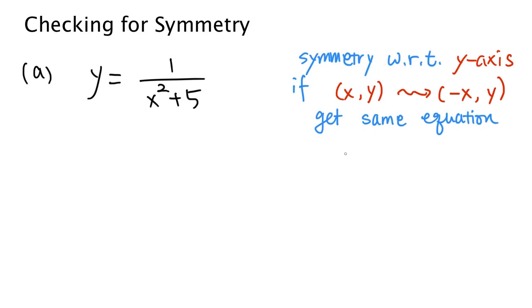In this video I'm going to talk about symmetry. When we are given an equation and we draw the graph of that equation, sometimes we get to see some kind of symmetry. I'm going to talk about three types of symmetry: symmetry with respect to the y-axis, with respect to the x-axis, and with respect to the origin.